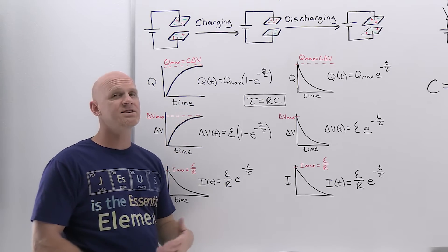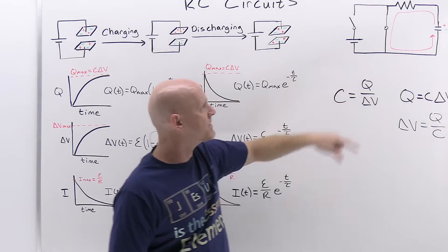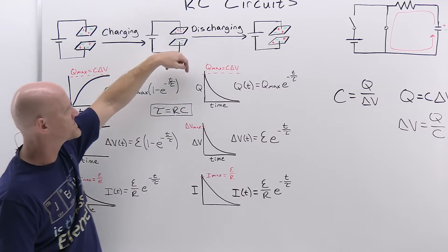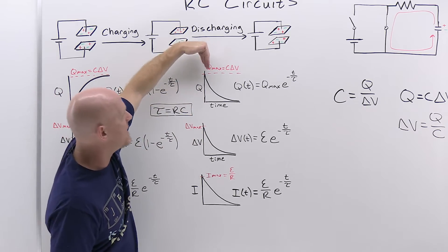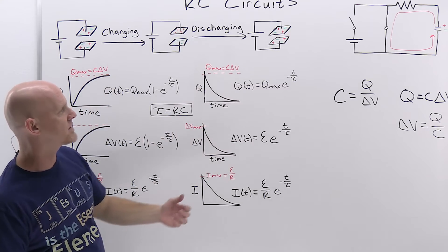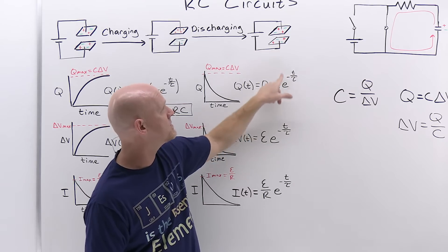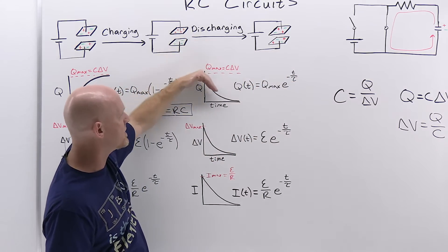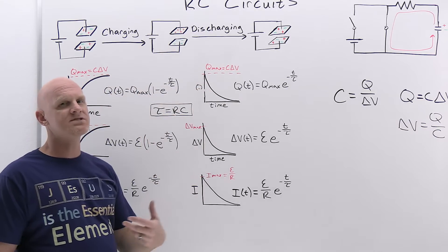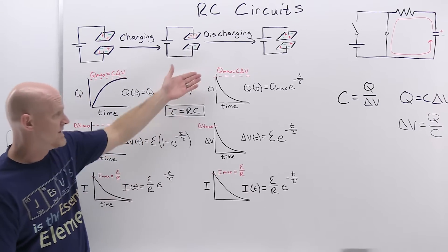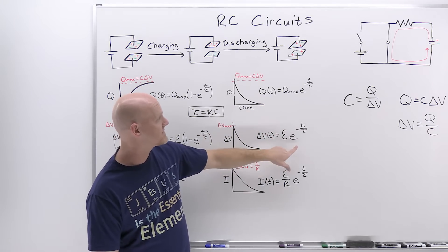Discharging is similar. We close the other switch with the capacitor in its fully charged state, and current reverses in that second loop going back through the resistor in the opposite direction. Starting at maximum charge and maximum potential difference, both now asymptotically approach zero. Instead of (1 − e^(−t/τ)), you take the maximum times e^(−t/τ). It takes about five time constants to reach full discharge — over 99%. So Q(t) = Q_max × e^(−t/τ), and ΔV(t) = EMF × e^(−t/τ).